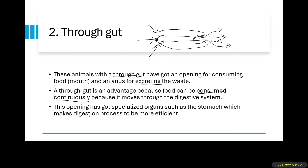I hope that is understood. This opening has got specialized organs such as the stomach. So when we've got a through gut, we've got specialized organs such as the stomach, which makes the process of digestion more efficient and easy. In humans we've got an oesophagus, a stomach, intestines, and so on. These specialized organs develop in animals which have got a through gut — those which have got an opening for entry of food and an opening so that the waste can come out. So those are the two types of guts that we have.